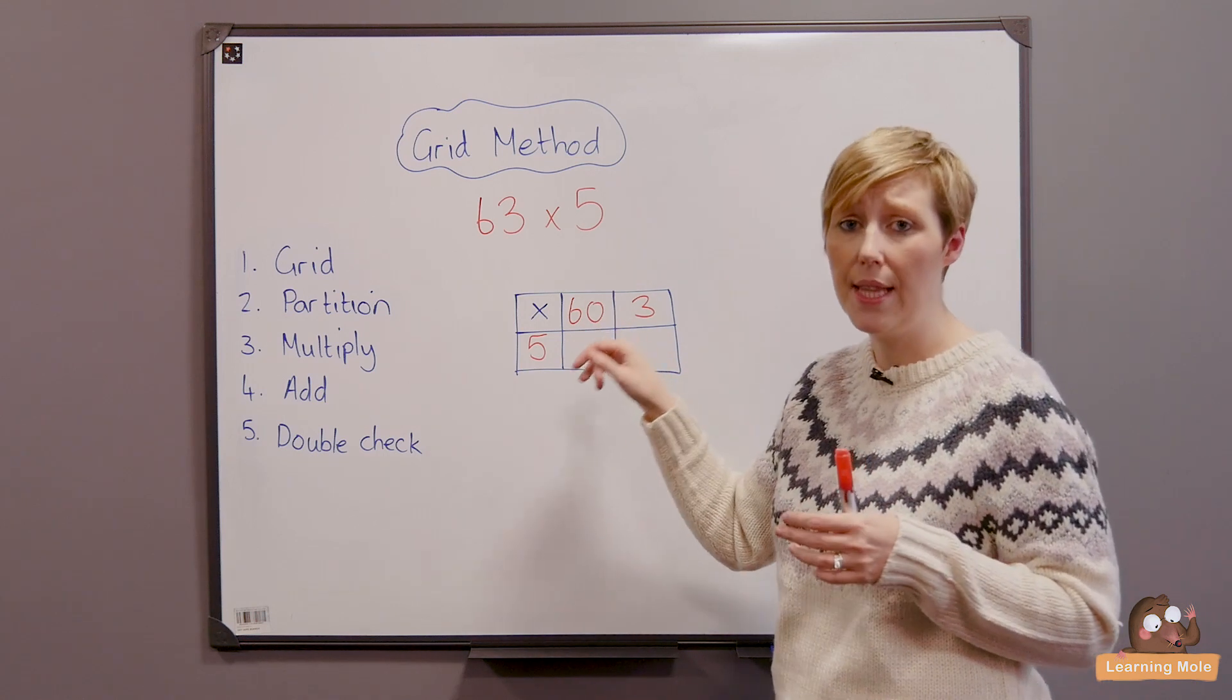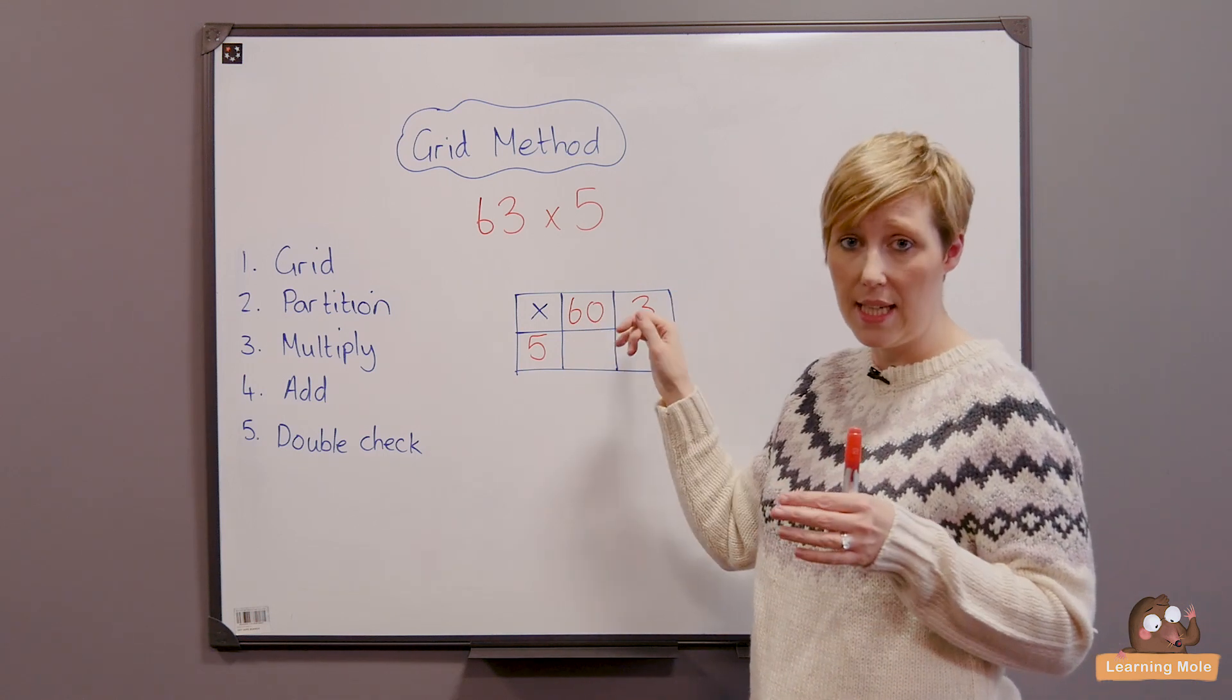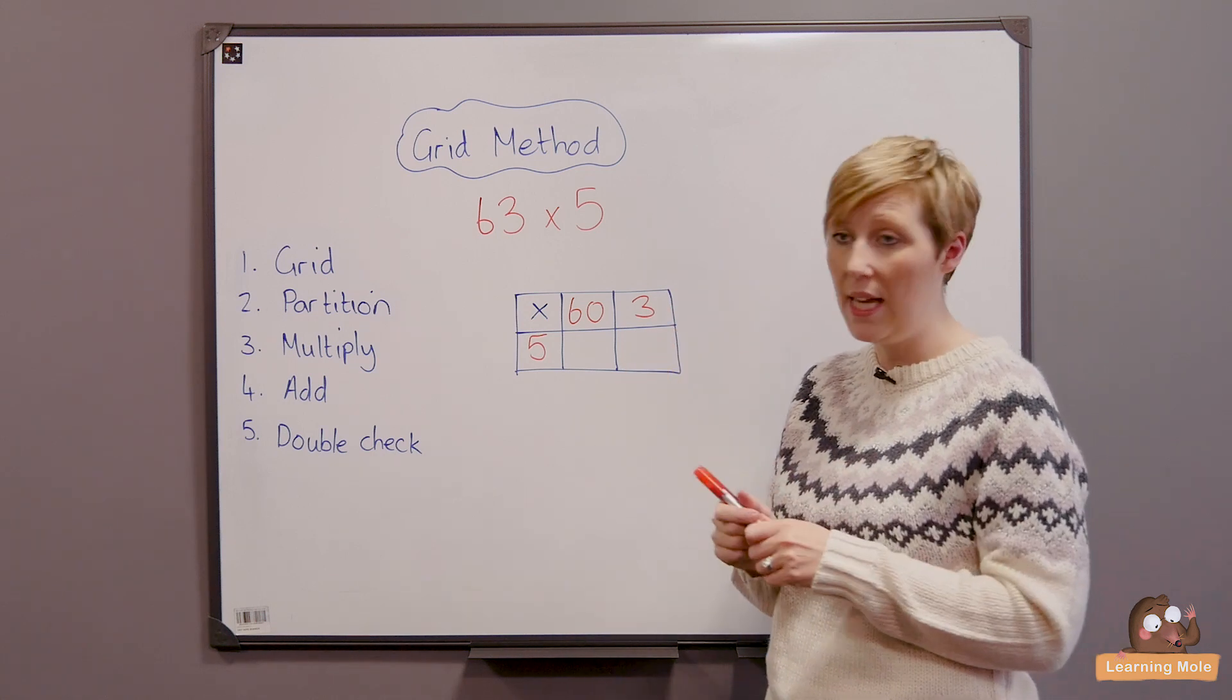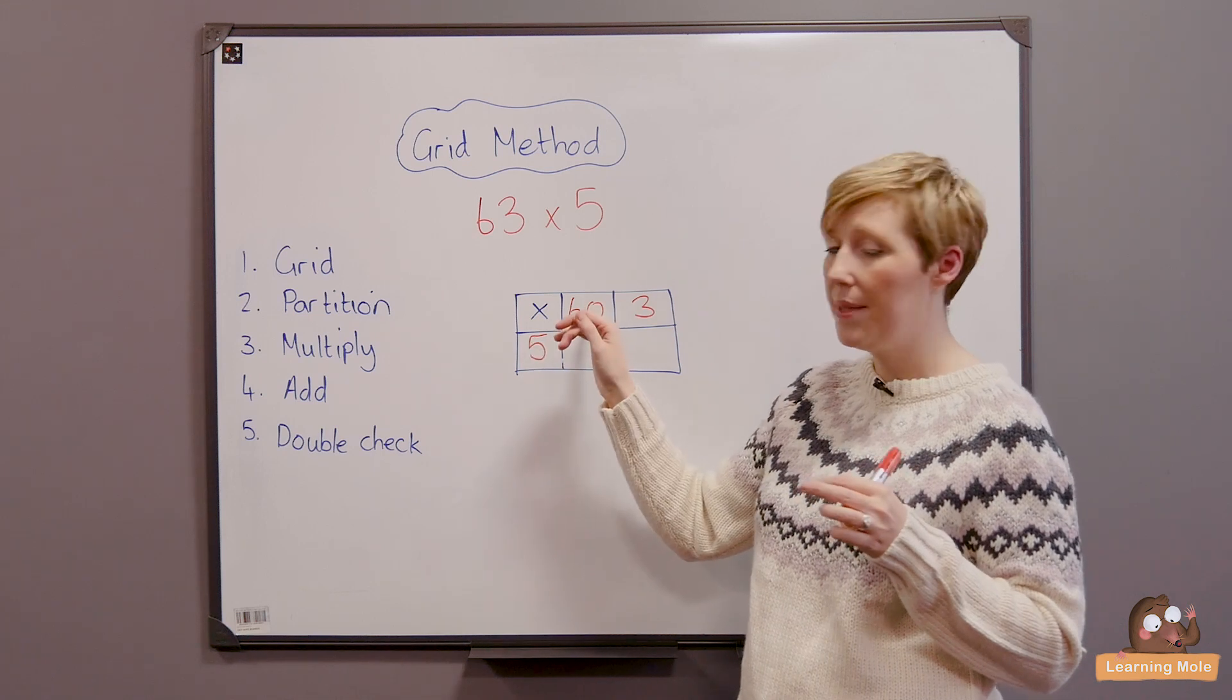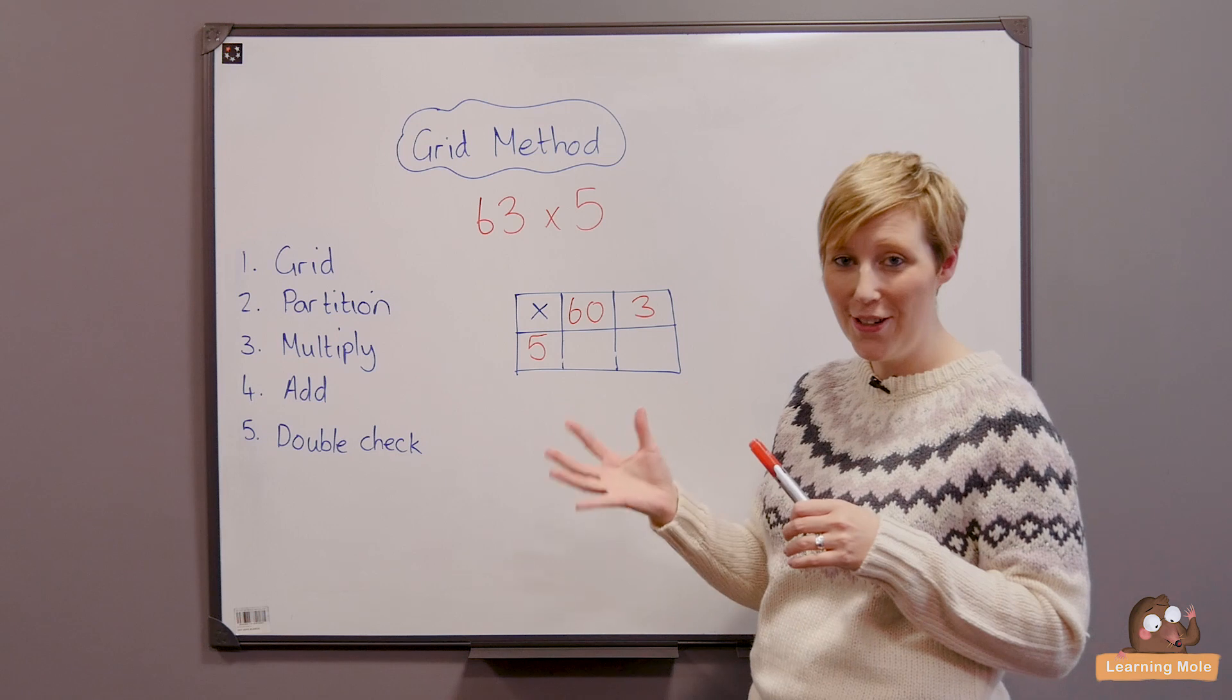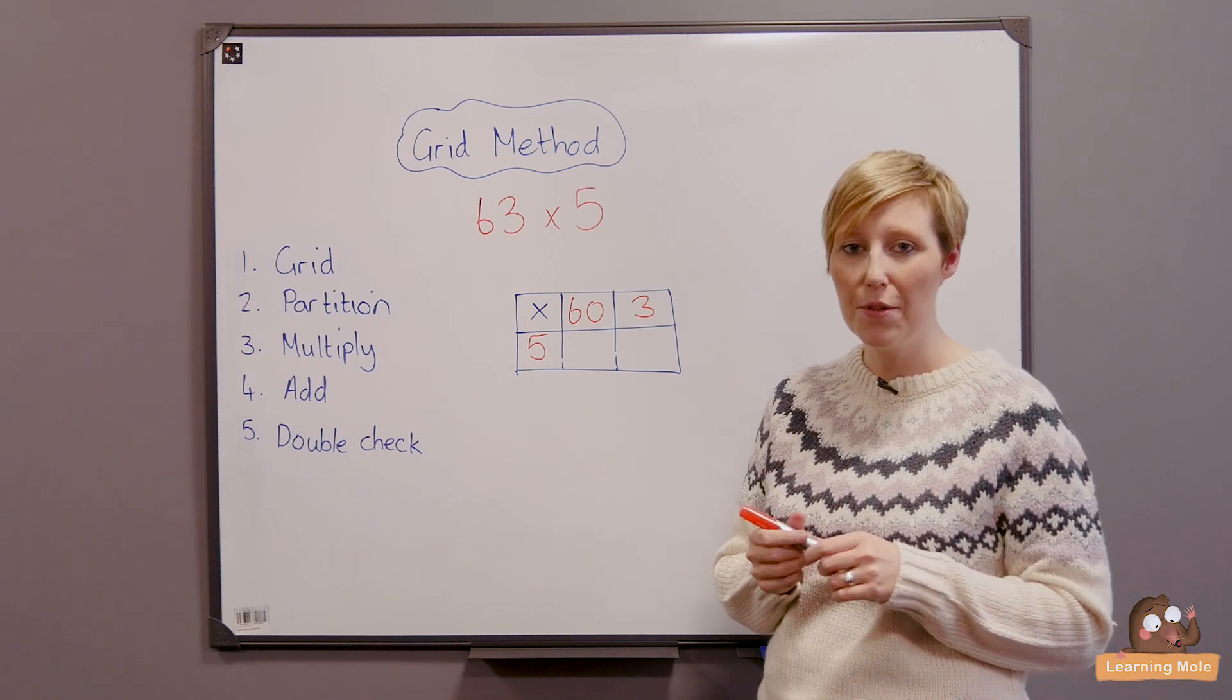But they must remember that this is not 6. It's 60. So they have to get that extra zero in because it's not 6. So you will start with your 5 times 6 or 5 times 60. We knew that 5 times 6 is 30. So 5 times 60 must be 300.